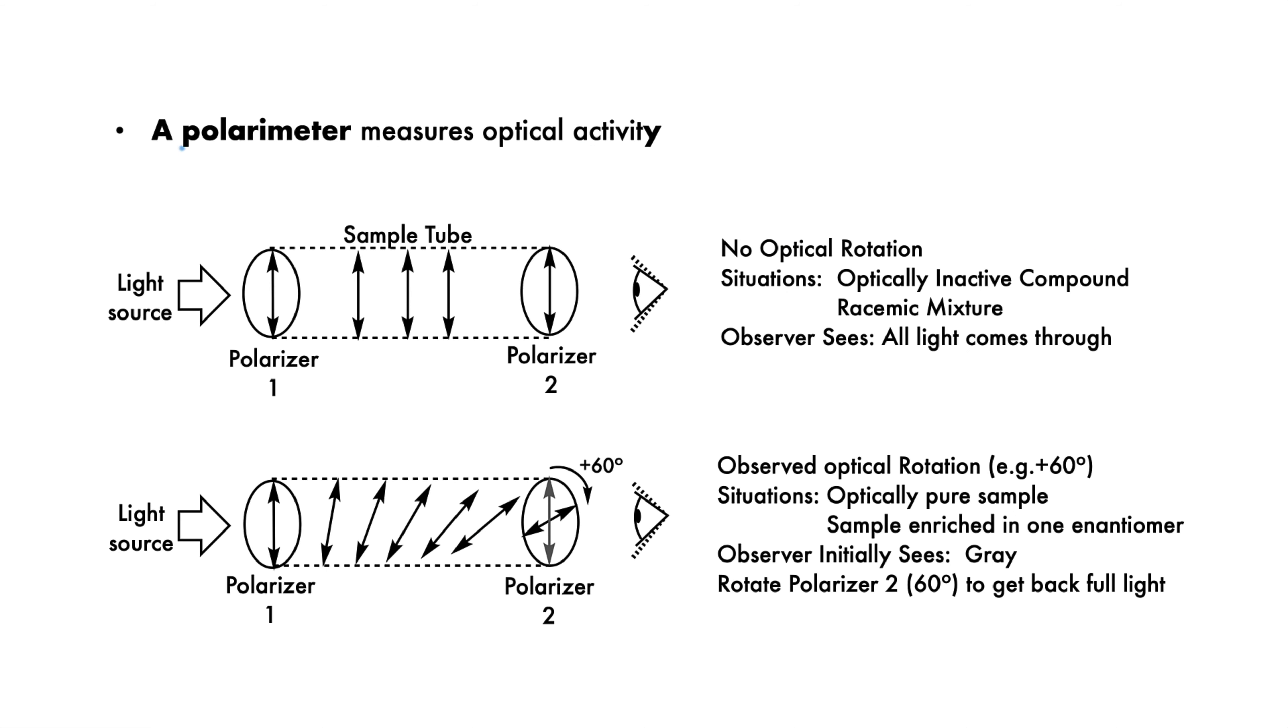The device used to measure optical activity is called a polarimeter. It has a sample tube between two polarizers. The first polarizer takes the light from the source and makes it coherent. The second polarizer is used to detect any optical rotation caused by the molecules in the sample tube. We always start with the two polarizers aligned.